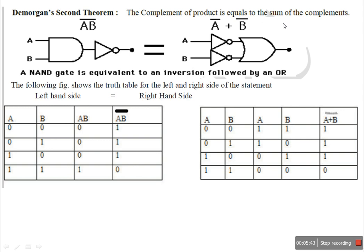The complement of a product — complement is the inverter, the NOT gate; product is multiplication; and this equals the sum, where sum uses an OR gate and complement uses a NOT gate. The left side is the complement of product: one AND gate with two inputs A and B, output A dot B, then a NOT gives A dot B bar. The right side is the sum of the complements: two NOT gates produce A bar and B bar, then an OR gate gives A bar plus B bar.